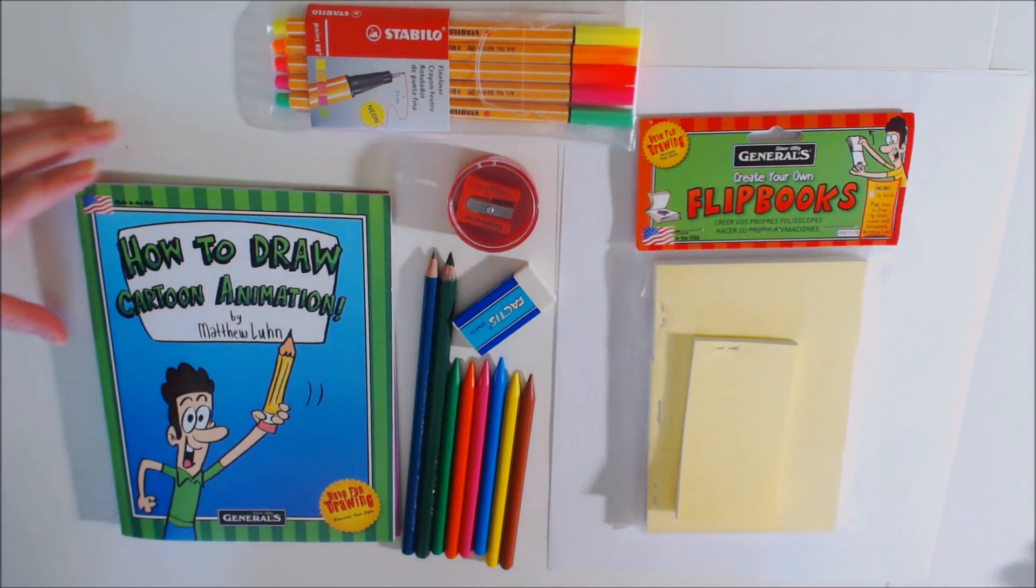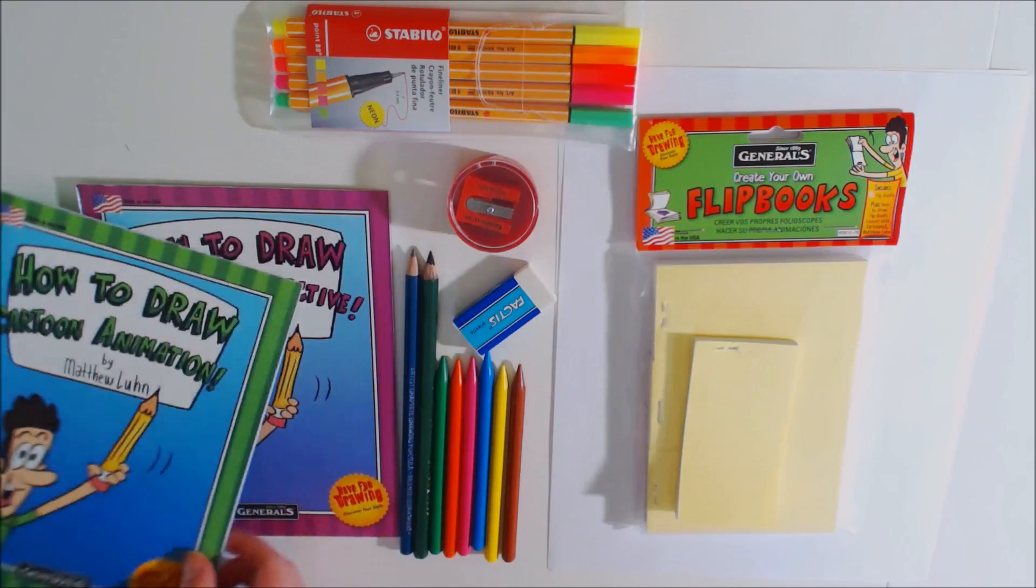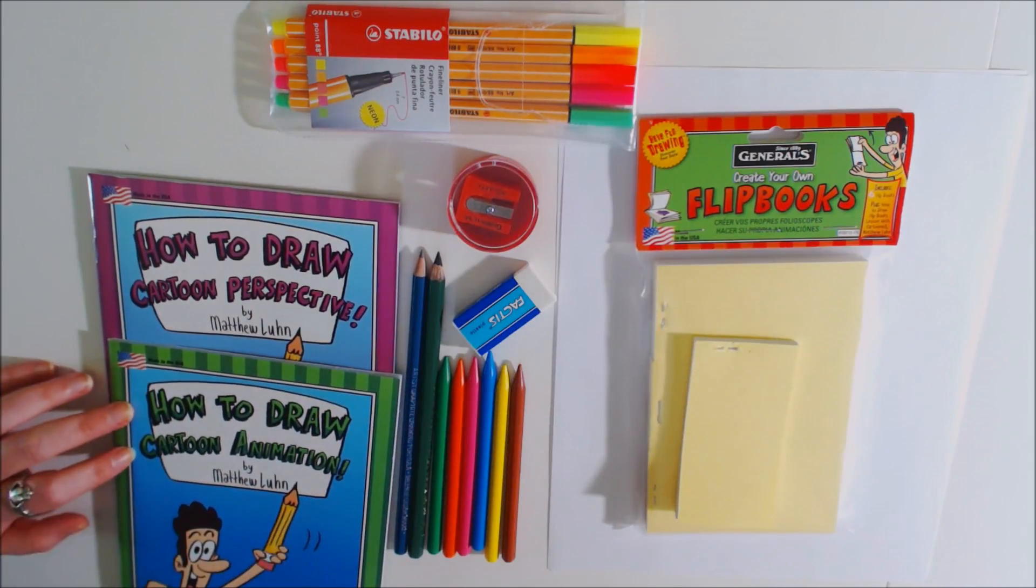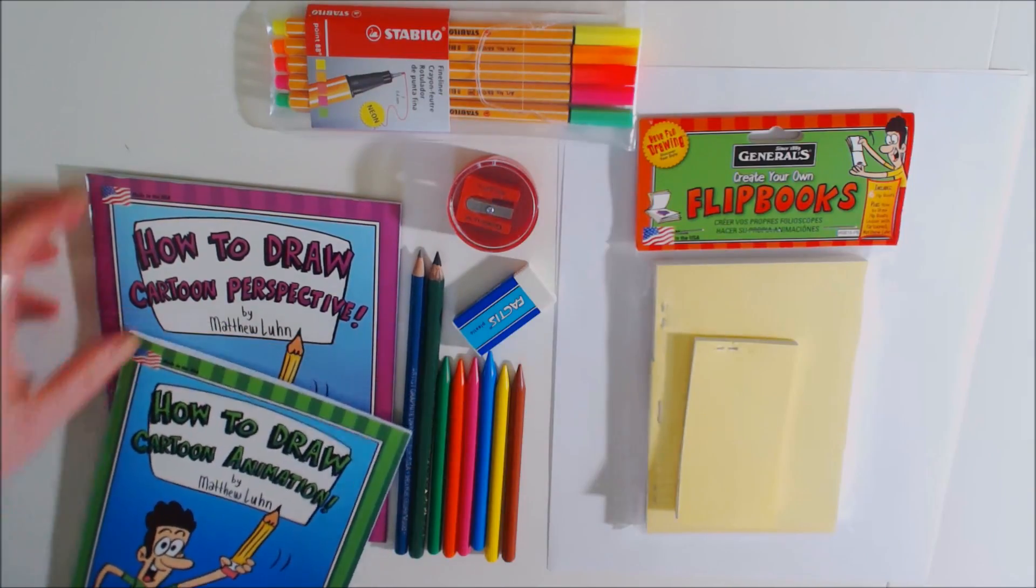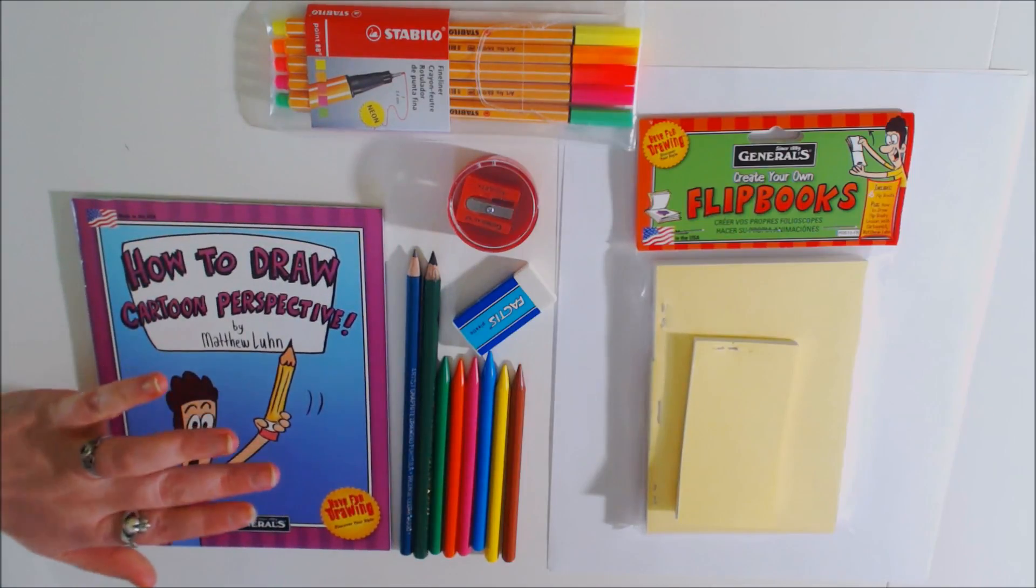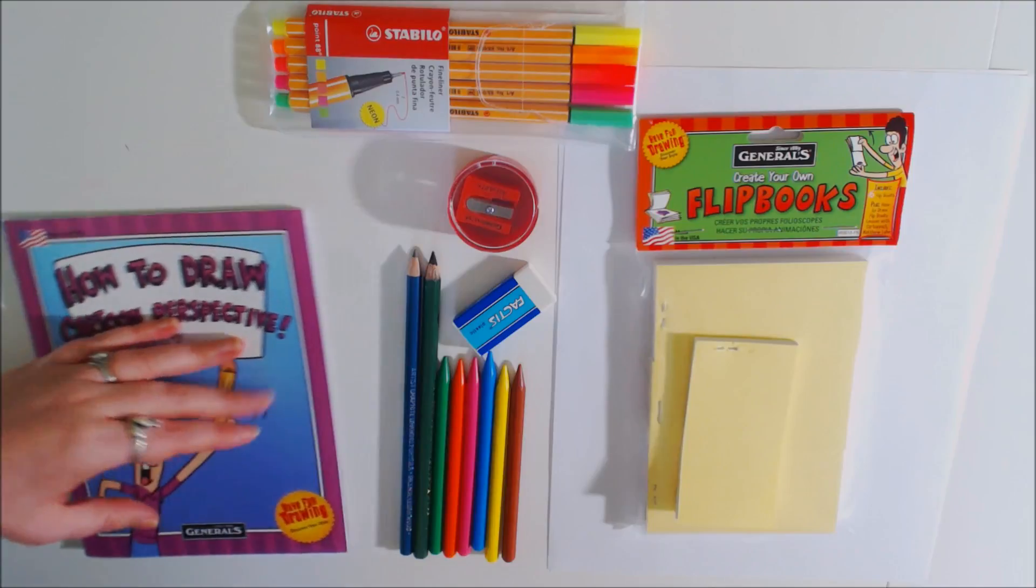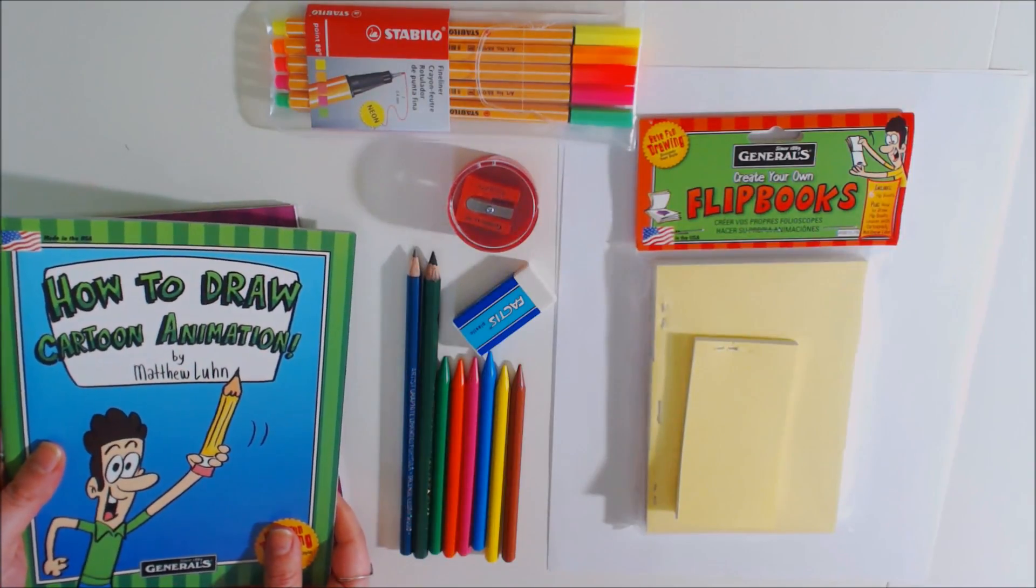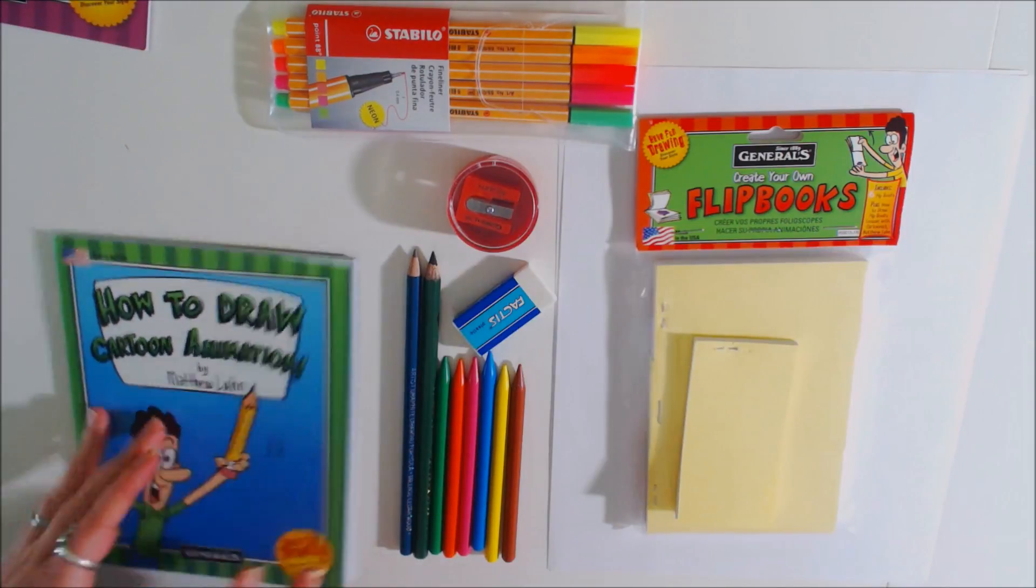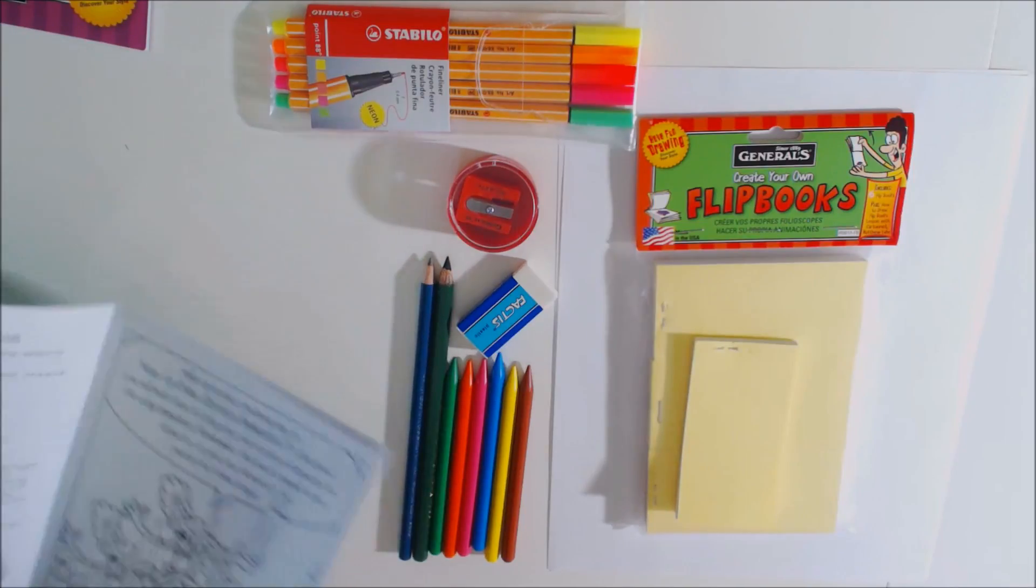Bridget's here too. All right, so I went over and looked through the books that came in the animation set, the flip book set, and it seems that this is the first book about perspective, but I think we're going to do the perspective stuff next week. So we're going to do this book. Are you excited?